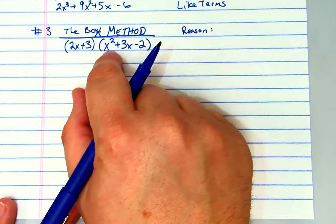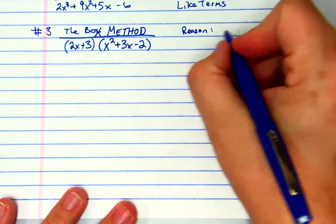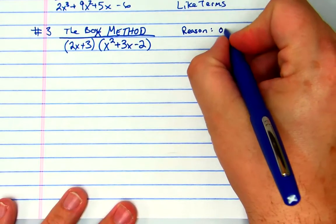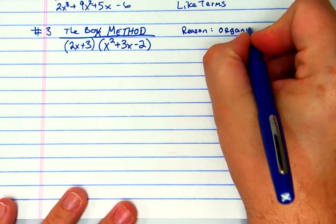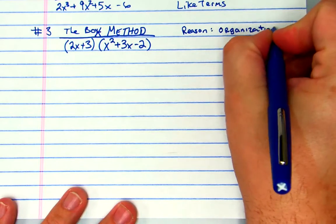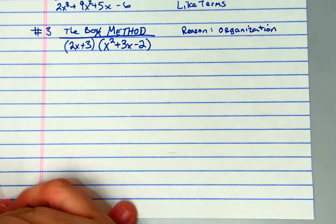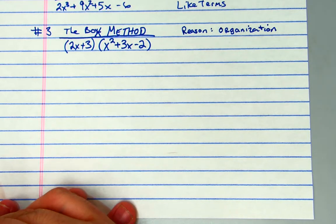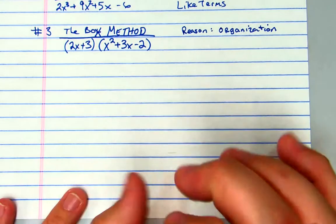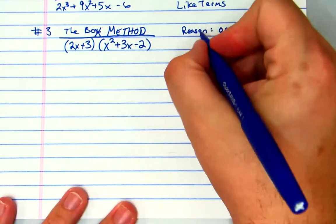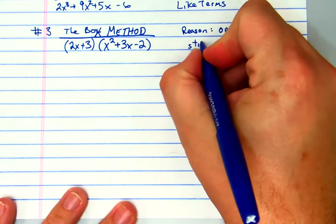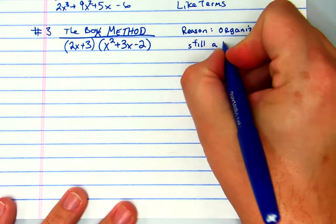The reason: organization. That's it. Organization. It organizes everything super nice and super easy, especially if you get a trinomial times a trinomial or something even larger than that. The box method works for every single way. It is still, in this case, a double distribution.